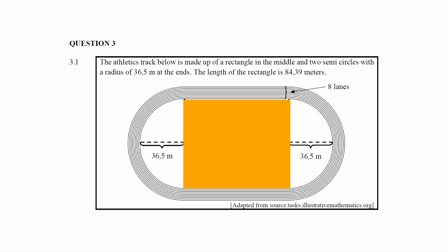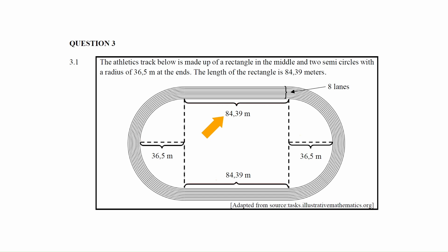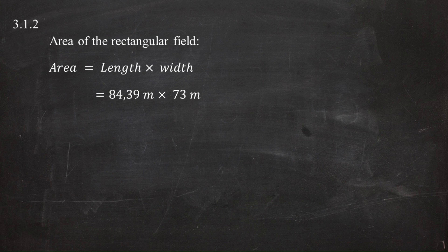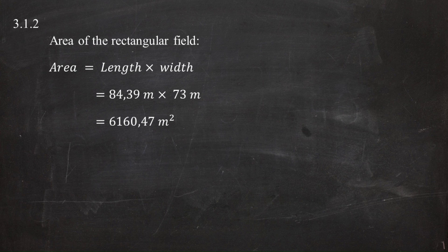The area of the rectangular section equals its length multiplied by its width. Substituting the length of 84.39 meters and the width of 73 meters gives an area of 6,160.47 square meters.